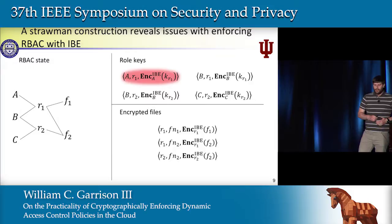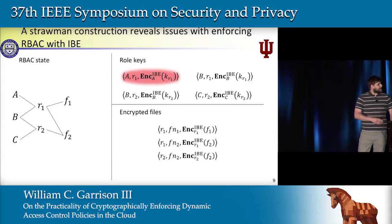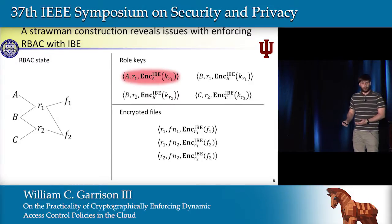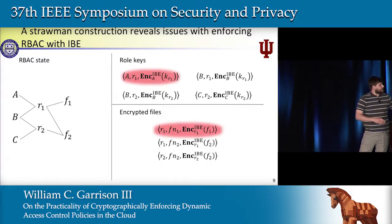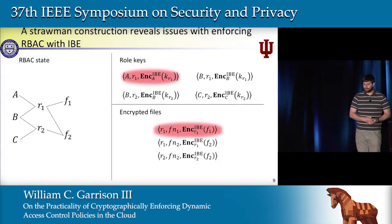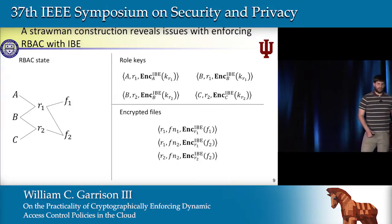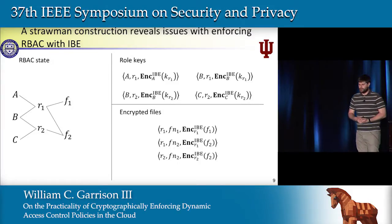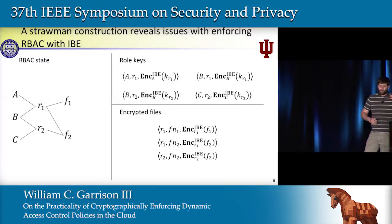So now if user A wants to access file 1, user A will download the key bundle—the role key—to get access to the private key for role 1, which has been granted to them. They'll then use that role key to decrypt the contents of file 1, which is encrypted using the identity for role 1. So in a static scenario, this seems like it works really well—everyone can access the things they're supposed to be able to.